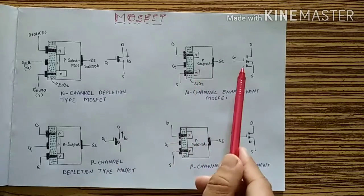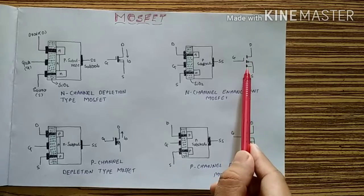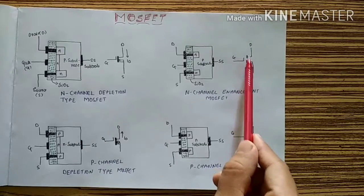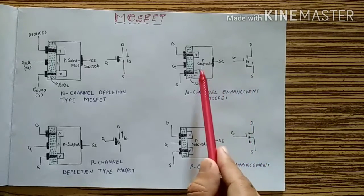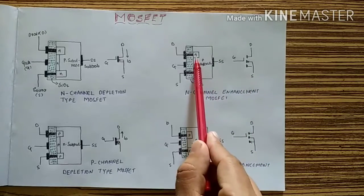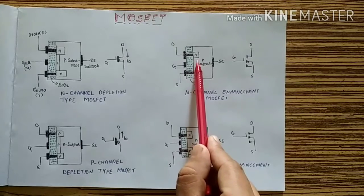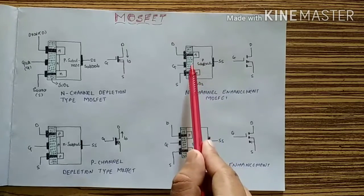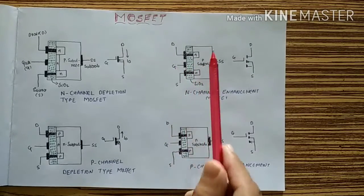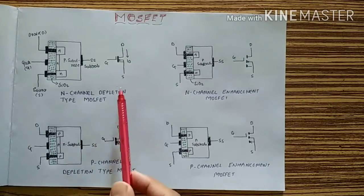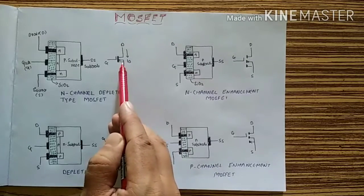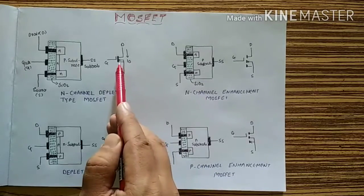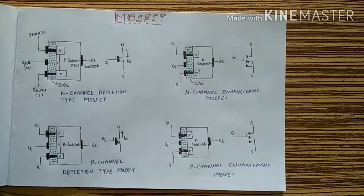This line in the symbol represents the substrate. In enhancement type, there is no N connected, and there is insulation between the gate and the P substrate. You can compare the symbol of depletion type and enhancement type — the extra line represents the substrate. This is the basic of the MOSFET.